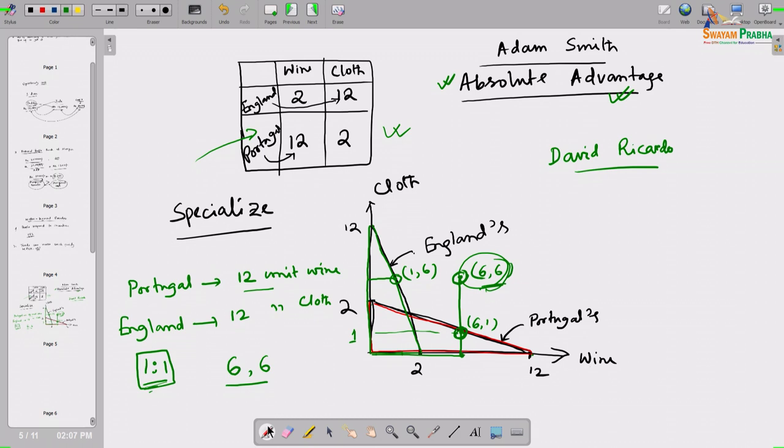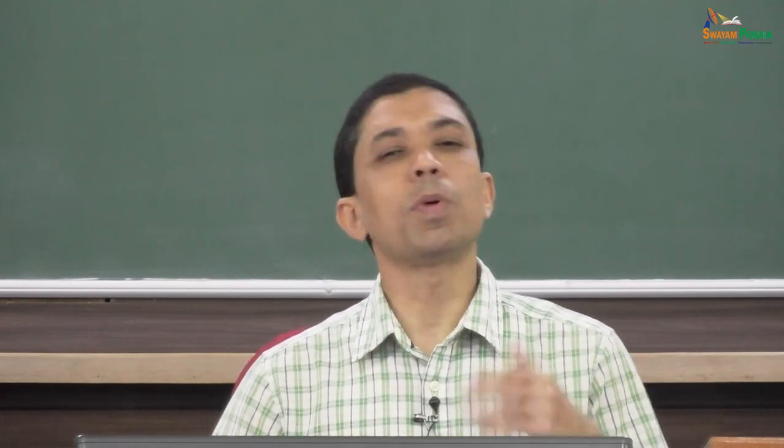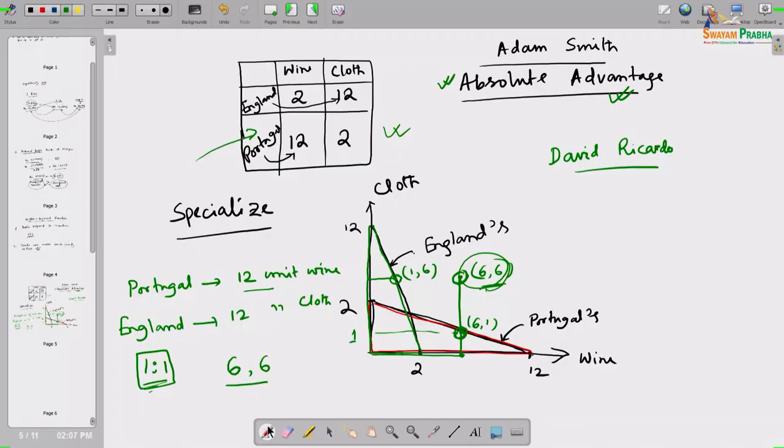Welcome again. As you know, we were discussing our fifth principle - trade can make each party better off. Using the principle of absolute advantage proposed by Adam Smith, we discussed a two-country, two-commodity framework. Today we will discuss the same principle - how trade can make each party better off even when there is no absolute advantage, or rather when one country has absolute advantage in both commodities.